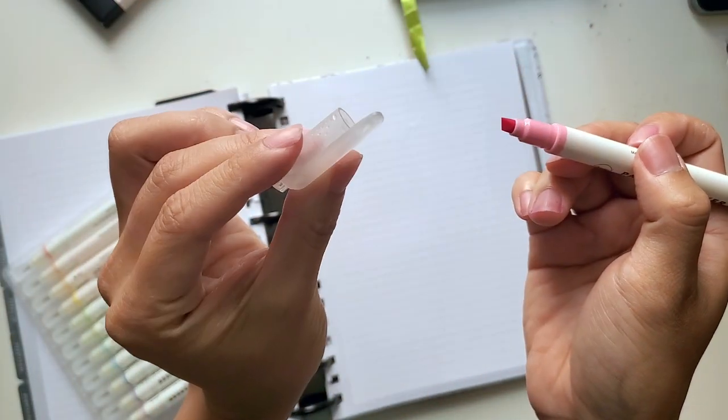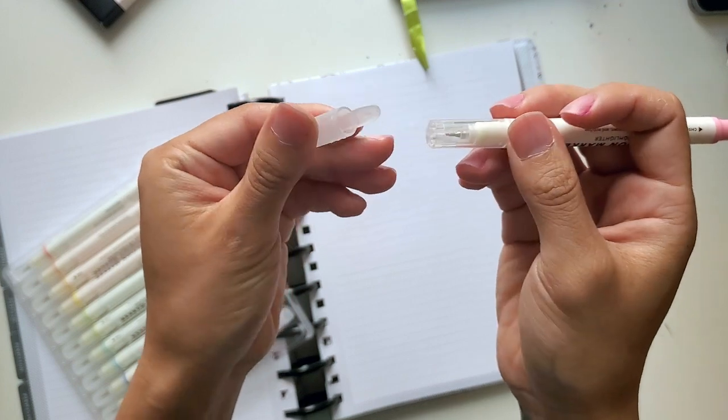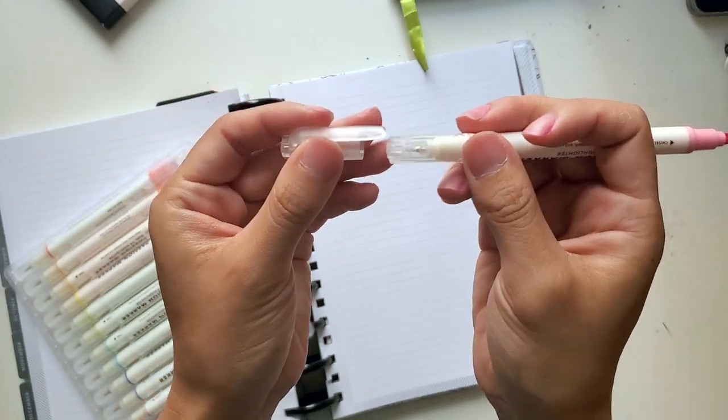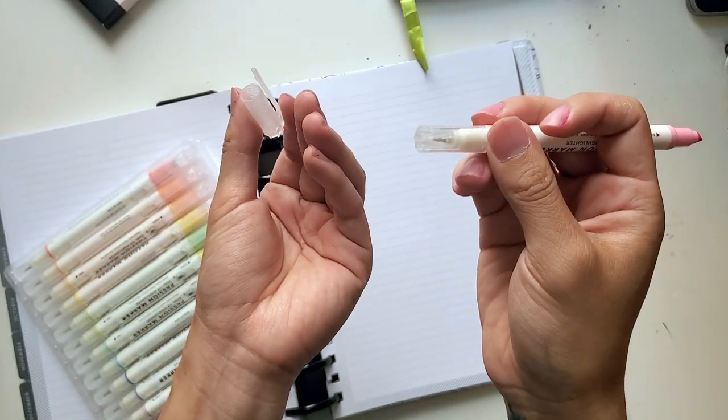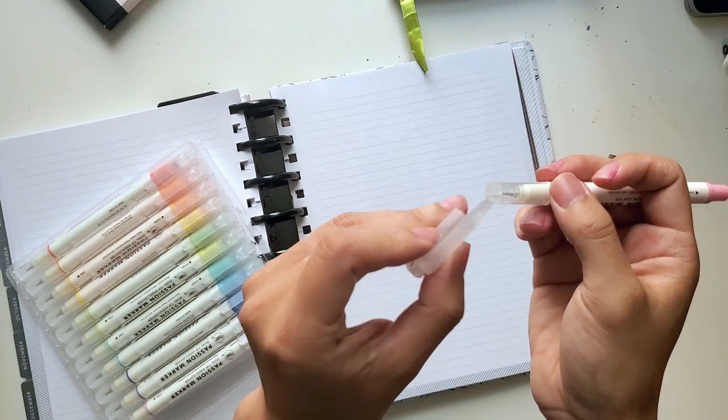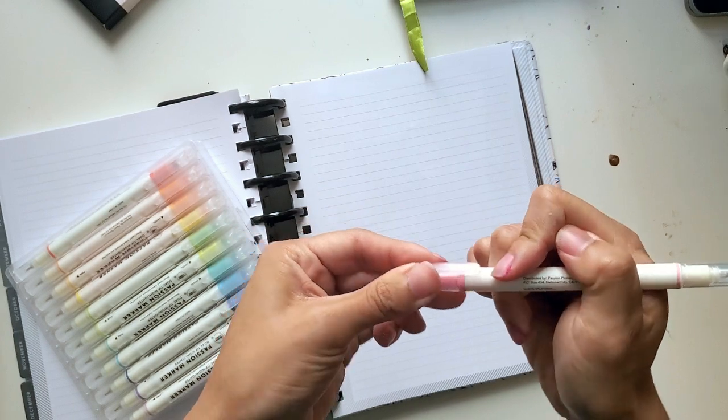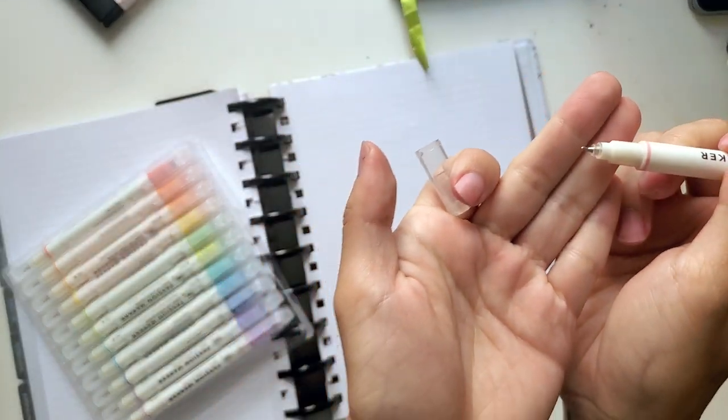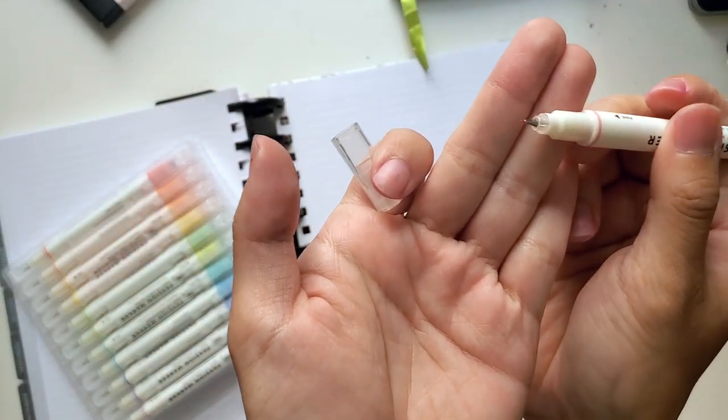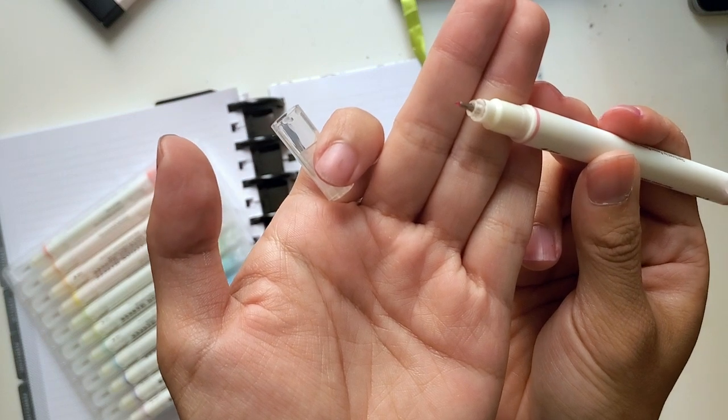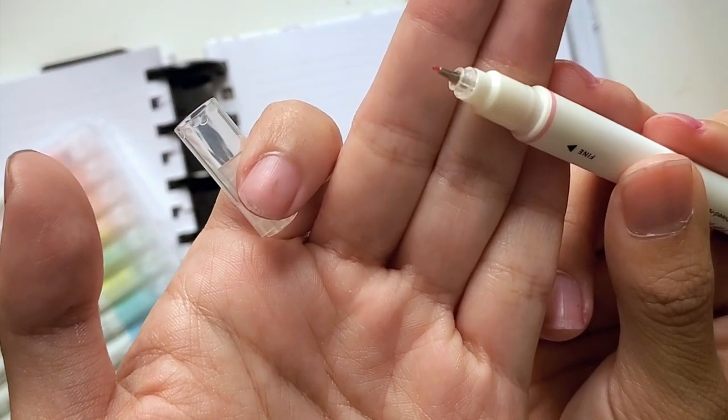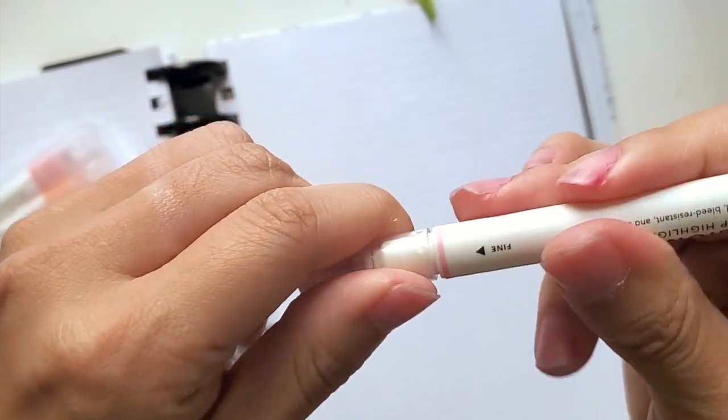And I think maybe something that's kind of annoying is that the cap does not stay on the other side, so you have to hold on to it separately. If you lose things, you're going to have to keep track of these caps. On the other end is a very fine tip, probably similar to the Stabilo 68. It's more plastic than the Statler. So let's see how they write.